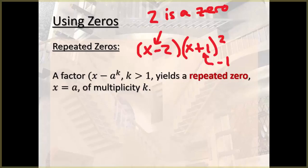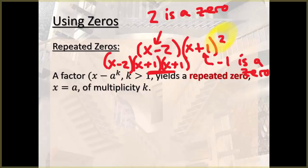Negative 1 is a zero. But notice that we have this square right there. That tells us that it is a repeated zero. It happens more than once. This thing could also be rewritten as x minus 2, x plus 1, x plus 1. All right. That negative 1 occurs more than once. It is a repeated zero.